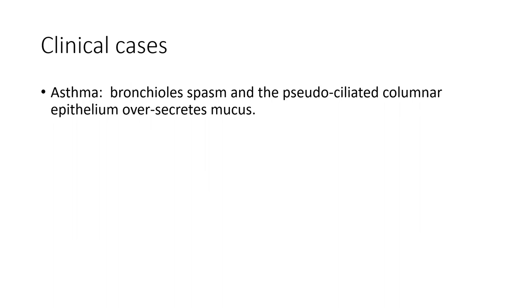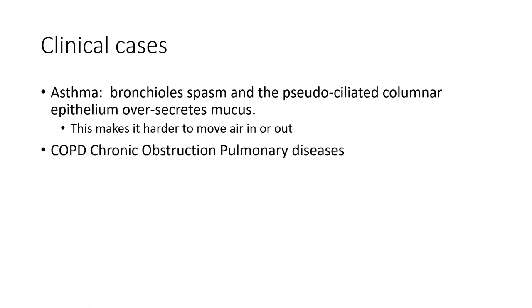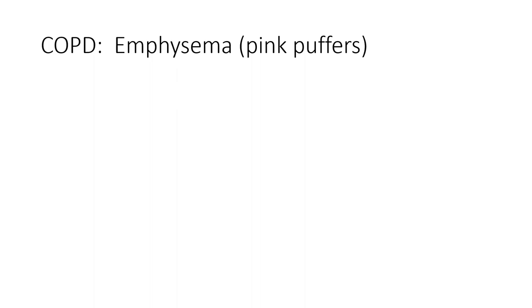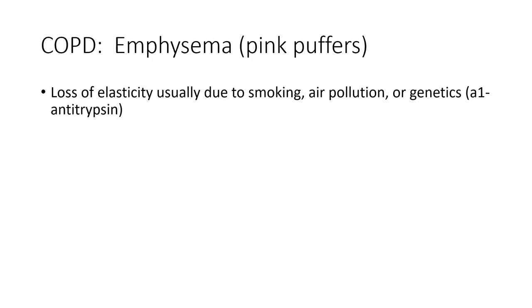There are some clinical cases to discuss. In asthma, bronchial smooth muscle can spasm, and the ciliated pseudostratified columnar epithelium can over-secrete mucus, leading to smaller bronchioles and a restrictive airway disease, making it harder to get air in and out and changing the pressure. Long-term, you can develop chronic bronchitis, usually due to smoking, or a chronic obstructive pulmonary disease — which can be obstructive or can include emphysema. There is also a genetic factor: some people have alpha-1 antitrypsin deficiency, which is a recognized genetic condition that can lead to emphysema without smoking.